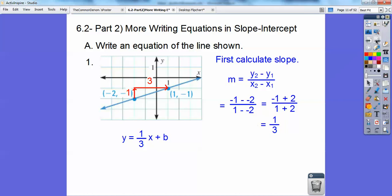So y equals 1 third x plus b. Now I'm going to substitute in. You can put in any point. I'm going to substitute in this point. This is my x. This is my y, and I'm going to plug it into this equation to get b.